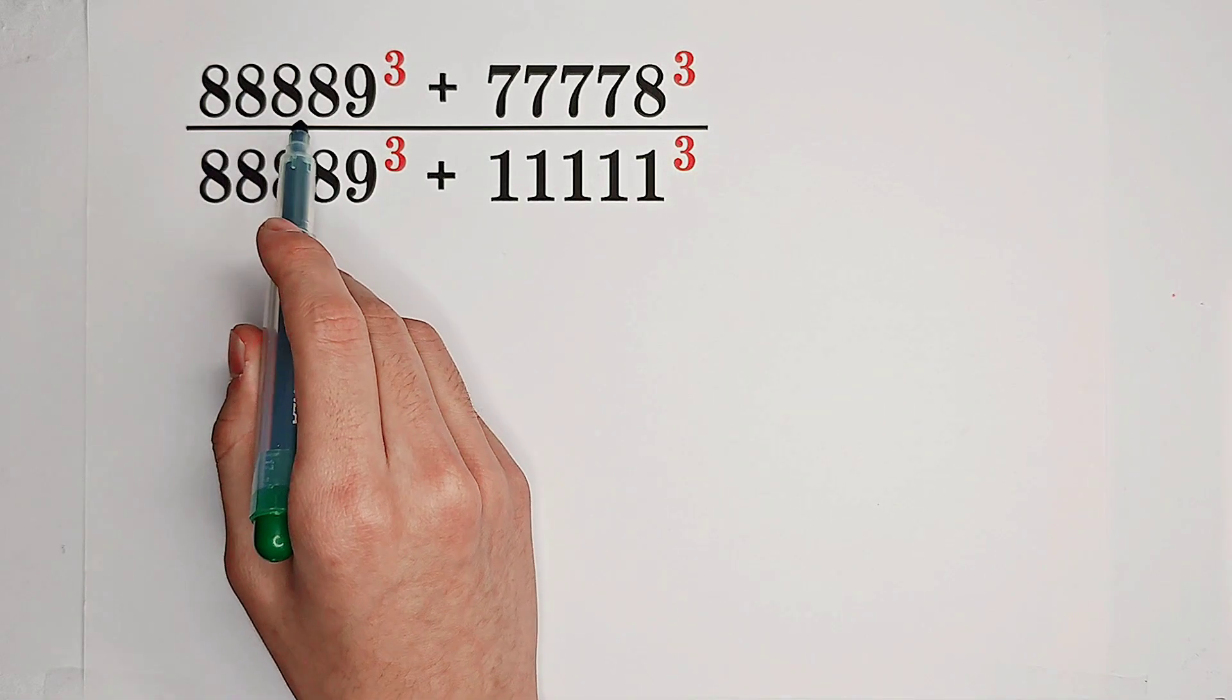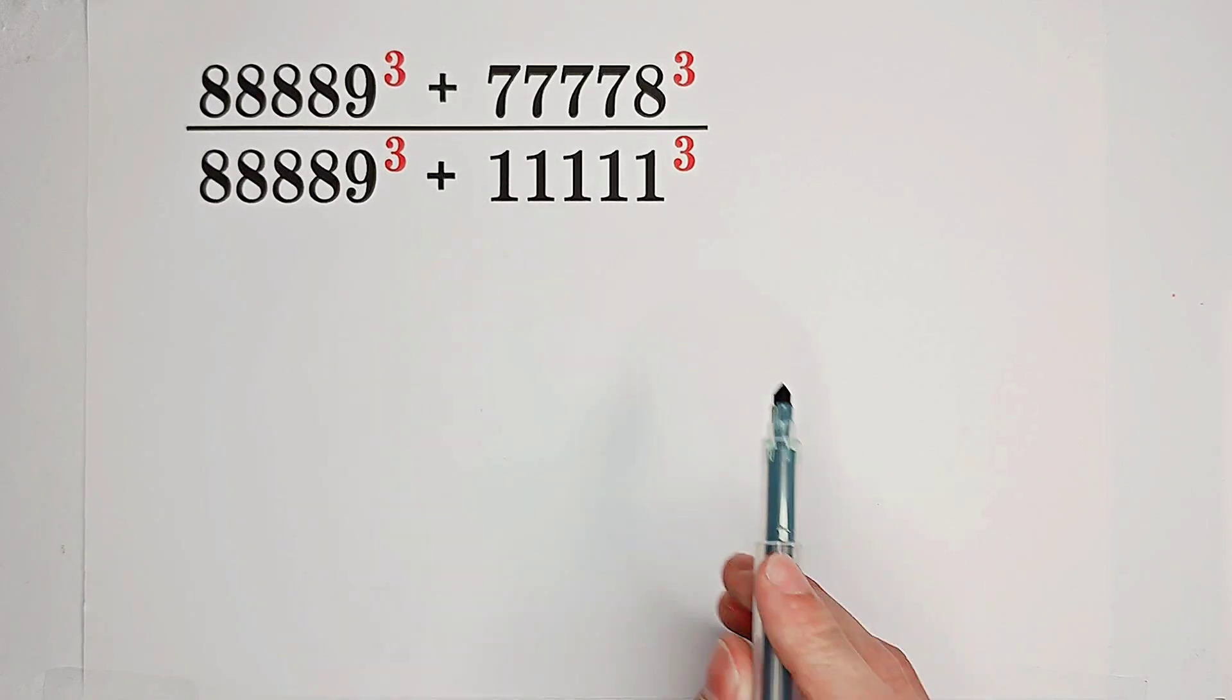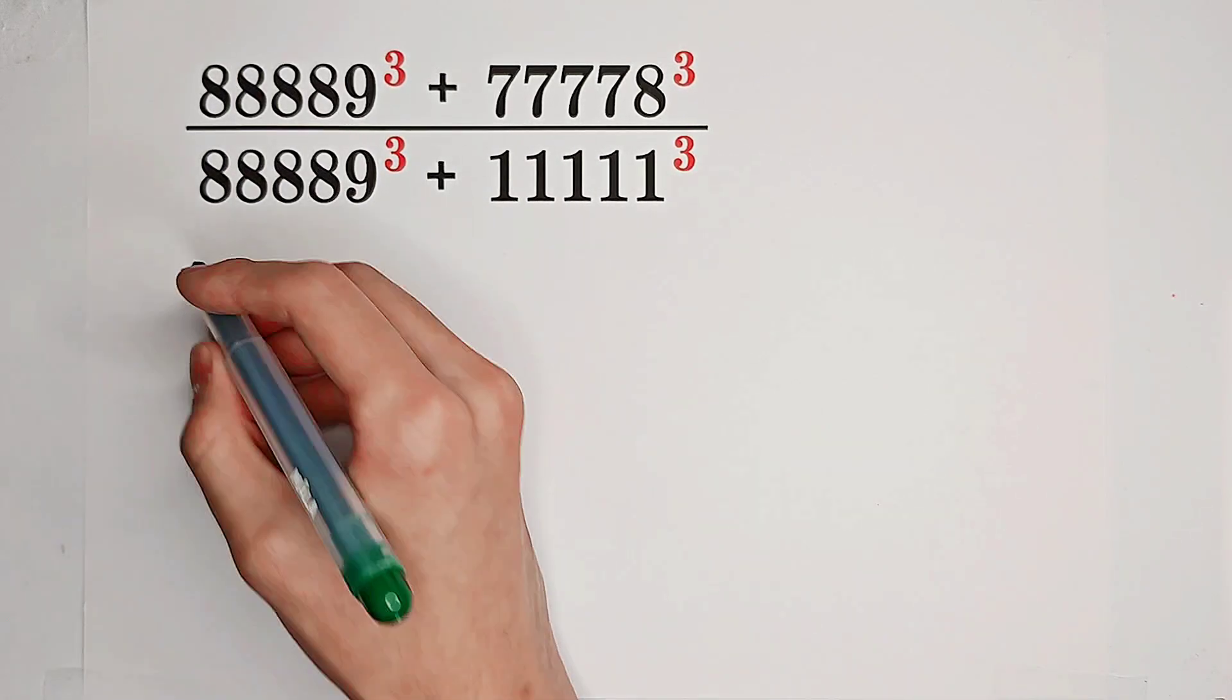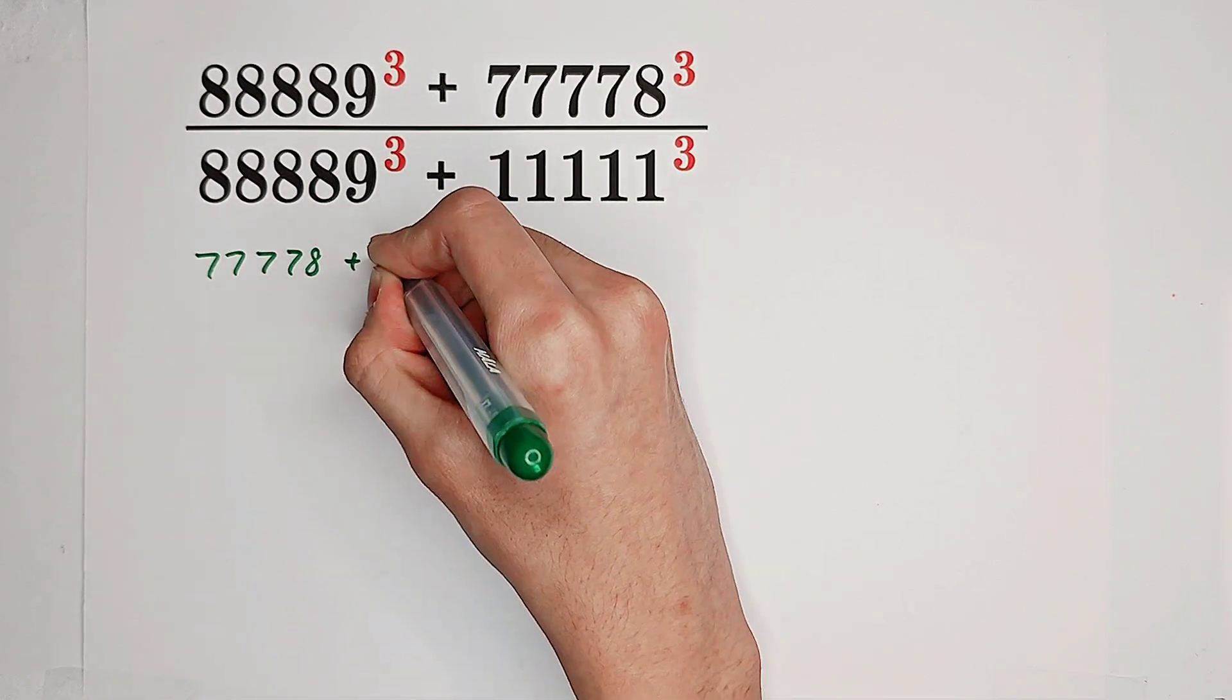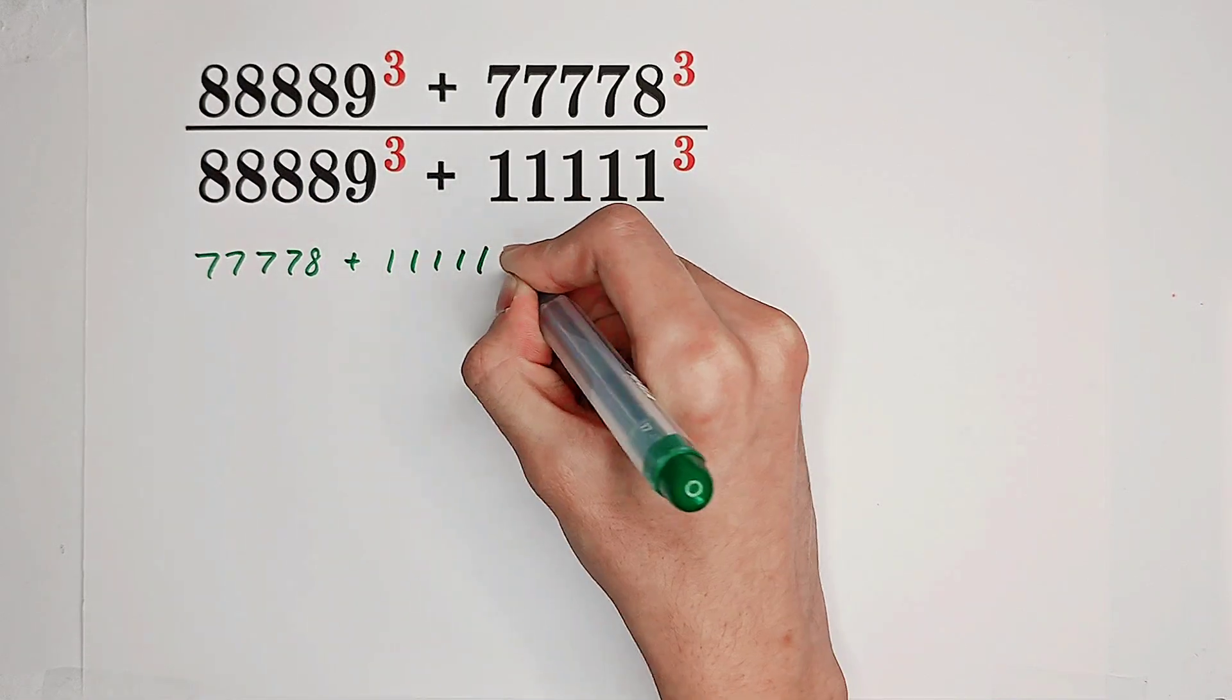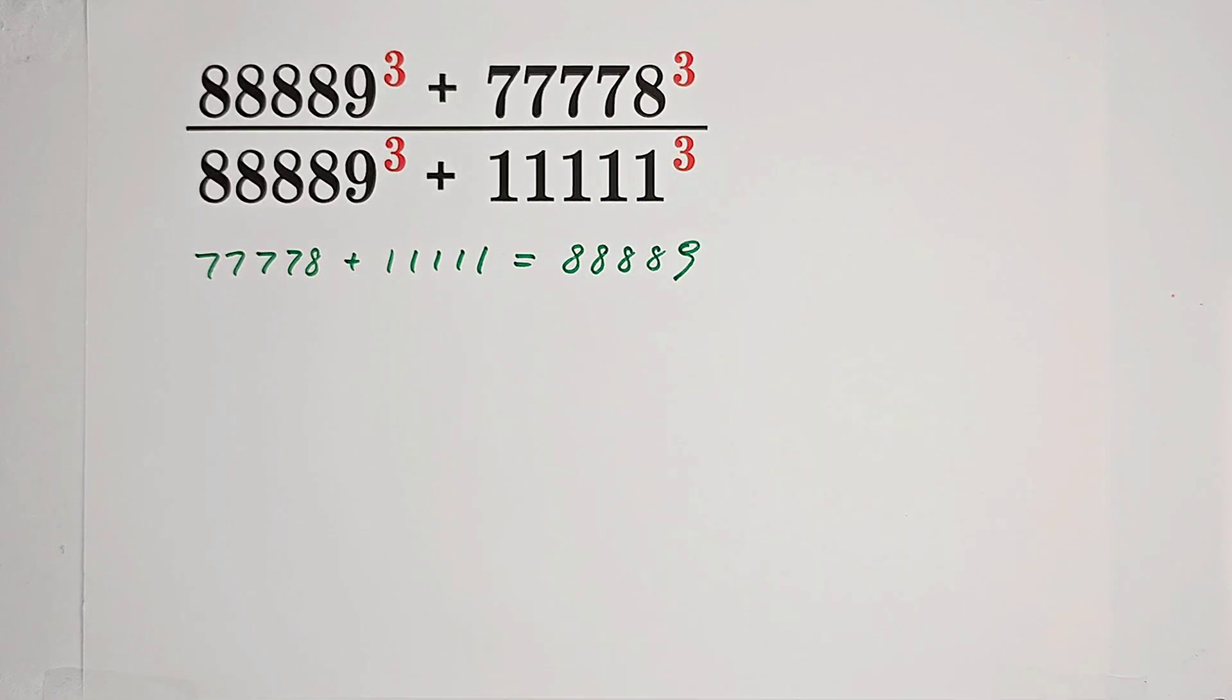Look, 88,889, 77,778, 11,111. What's that relationship? Of course, 77,778 plus 11,111 is just 88,889. Very good.